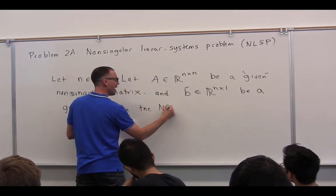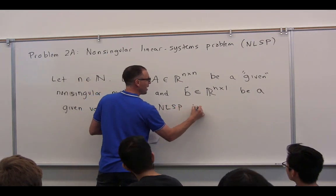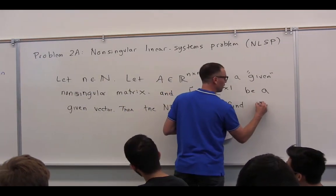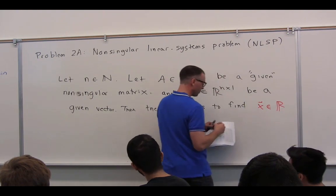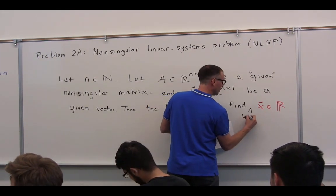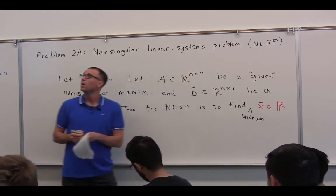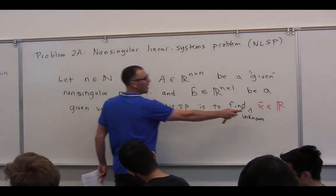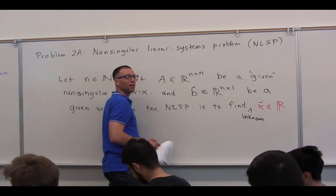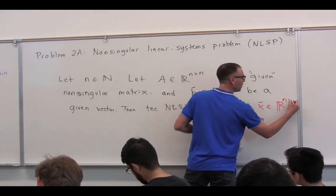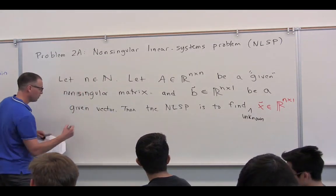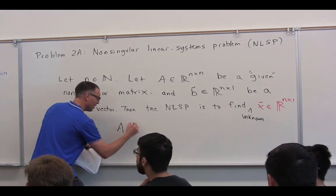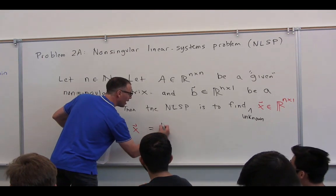Then the NLSP is to find... Can you guess what I'm about to write? How big would X have to be? Look back over there. The number of rows of X is equal to the number of columns of A. N by one. And what should be true about these? A times my unknown vector X is equal to my vector B.